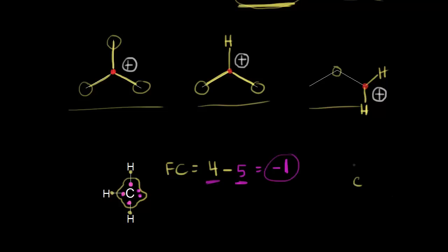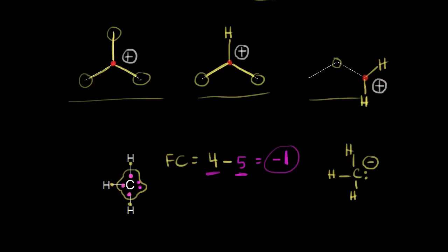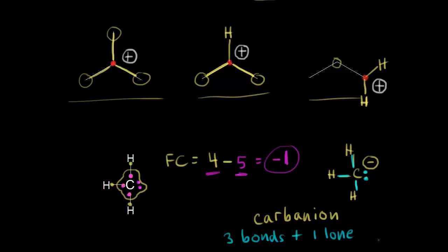Carbon is supposed to have four valence electrons; here it has five, so it's gained an extra electron, giving it a negative one formal charge. We have carbon with three bonds to hydrogen and one lone pair of electrons — a negative one formal charge — represented with a negative sign next to the carbon. A carbon with a negative charge is called a carbanion. The pattern: three single bonds plus one lone pair of electrons on carbon gives a negative one formal charge. Carbanions also come up in mechanisms in organic chemistry.